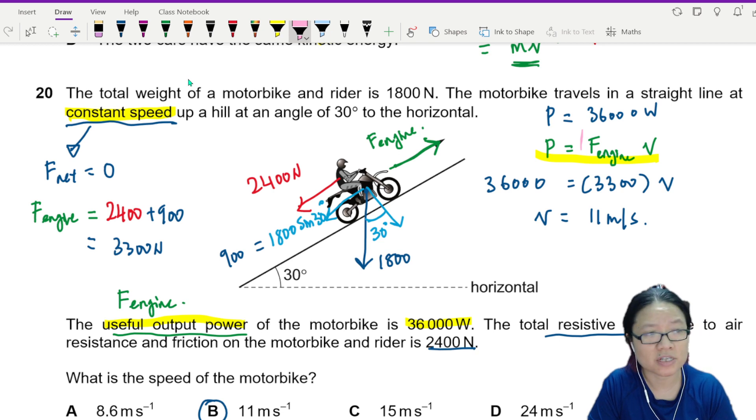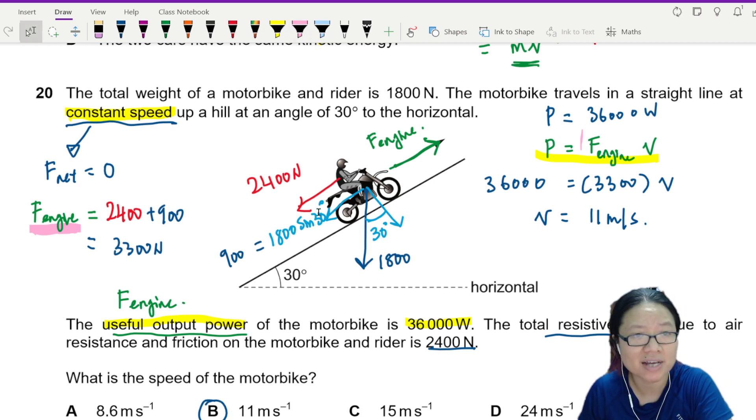So not net force, the other forces or the force of the engine. Because this is the engine, it's the one that drives the motor forward. So it is the engine force that provides us this 3600 watt. So make sure you use net force. Don't just put 2400. Don't just put 1800 sin 30.